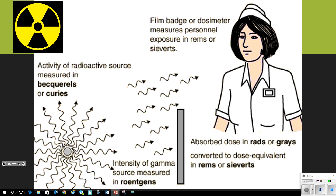A film badge or dosimeter measures personal exposure in rems or sieverts from a radioactive source. If you have a radioactive source, you measure what it gives off in becquerels or curies. The intensity of a gamma source is measured in roentgens. The absorbed dose is reported in rads or grays, and we can convert that to a dose equivalent in rems or sieverts. This picture helps show where each unit is used — find whatever method helps you remember how each one applies.